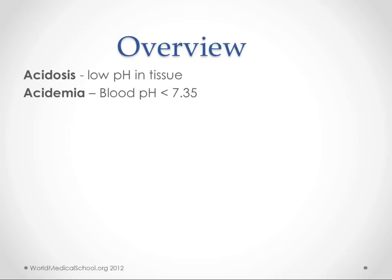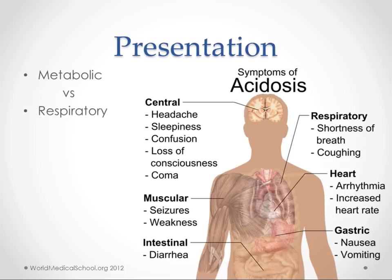Acidosis means low pH in the tissue — it also means just the process of creating more acid. Acidemia is specifically blood pH less than 7.35. The symptoms most people present with include some kind of CNS disturbance like confusion up to coma, some kind of respiratory disturbance, usually shortness of breath, and tachycardia and GI symptoms are also prominent.